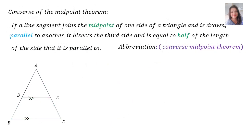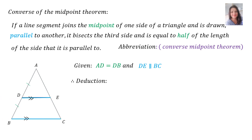The converse of the midpoint theorem states: if a line segment joins the midpoint of one side of a triangle and is drawn parallel to another side, it bisects the third side and is equal to half of the length of the side that it is parallel to. The abbreviation we will use is 'converse of the midpoint theorem'. Given that AD equals DB and DE is parallel to BC, the deduction is that AE equals EC and DE is half of BC.